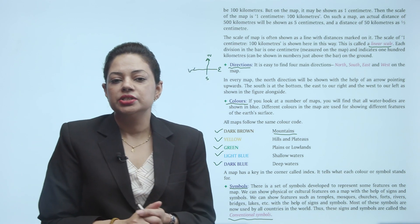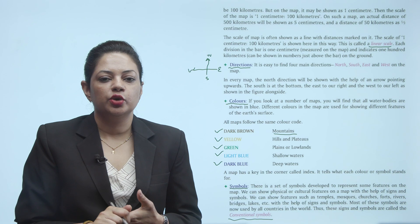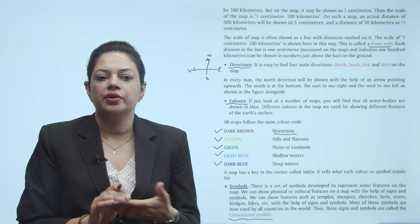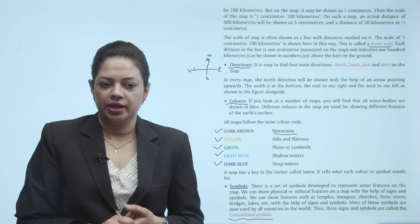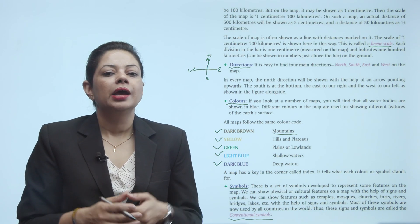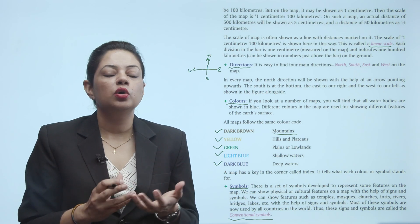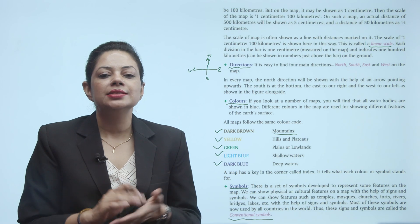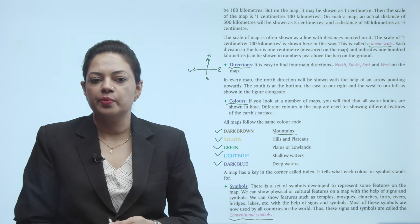Map par alag alag cheezein show kar sakte ho — jaise temple, mosque, school building, churches, fort, river, lake. Har ek cheez ka map ban sakta hai. In cheezon ko show karne ke liye kuch hum internationally symbols use karte hain jo har jagah — all countries in the world — use hote hain. Un signs and symbols ko kya kehte hain? Conventional symbols.